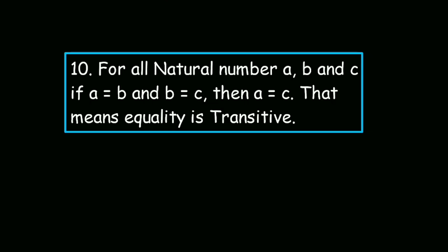Our next axiom is, for all natural numbers a, b, and c, if a is equal to b and b is equal to c, then we have a is equal to c. That means equality is transitive. Both greater than and less than relations are also transitive. As it is true that a is less than b and b is less than c implies a is less than c, and a is greater than b and b is greater than c implies a is greater than c.